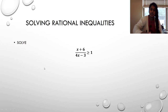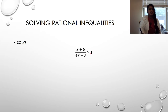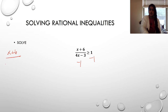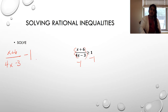Here's the second example. Step one: we currently have one fraction. But we don't have a zero, so I'm going to subtract 1 from both sides. That leaves us with (x+6)/(4x−3) minus 1 ≥ 0, where the minus 1 comes to the outside of the fraction.